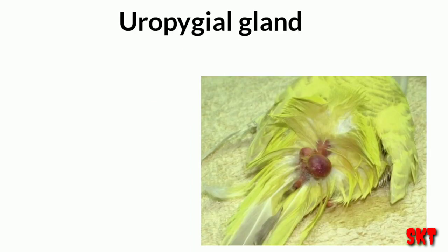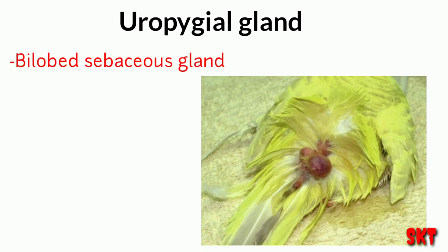The next gland is the uropygial gland. These are bi-lobed sebaceous glands present in birds at the base of their tail end. These glands secrete an oily secretion which helps in the preening of feathers in birds.